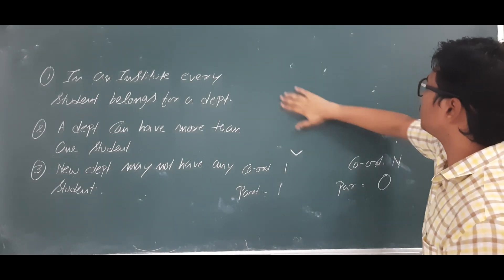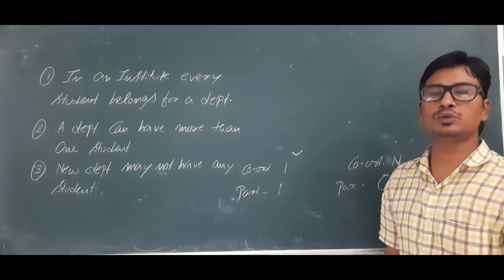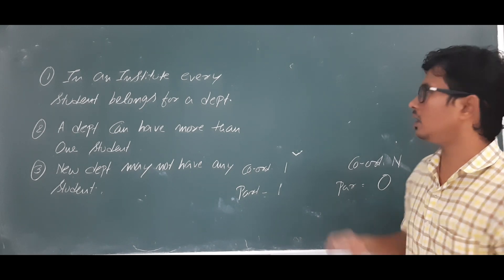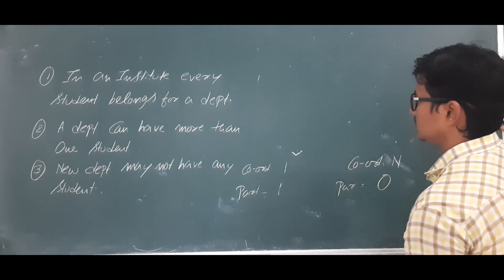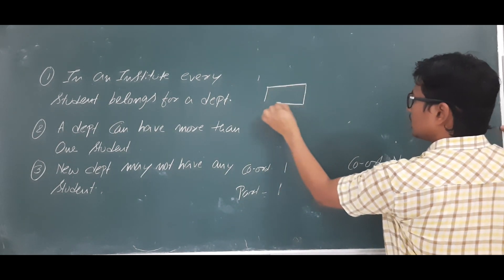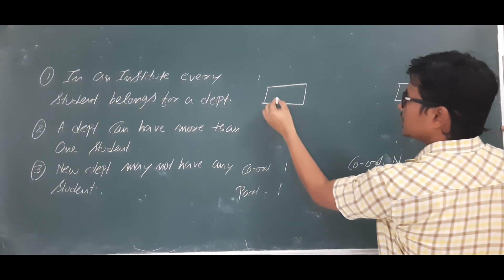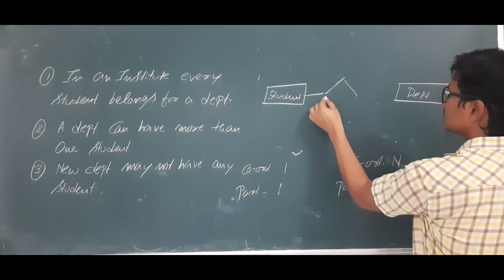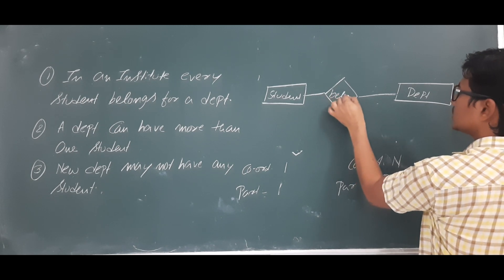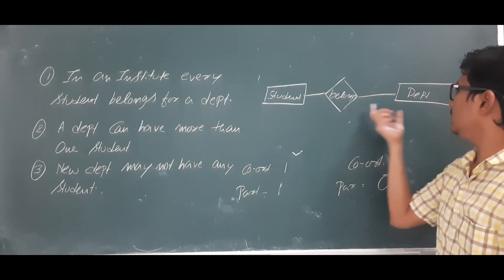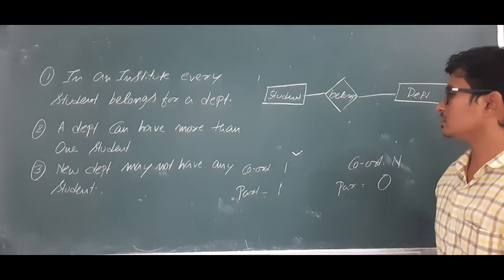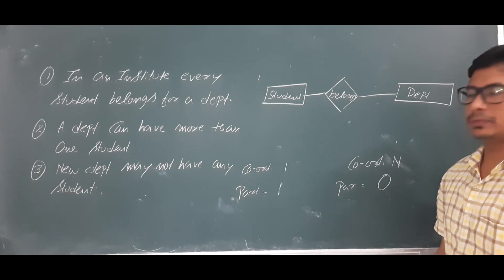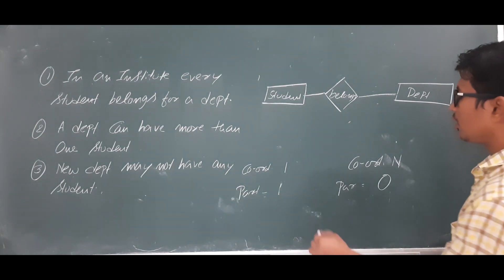Once we have the cardinality and participation for each entity, we can construct the ER diagram. The ER diagram can be represented in two ways: cardinality ratio representation and min-max representation. In cardinality ratio representation, the student entity is drawn as a rectangle, the department entity as a rectangle, and the relationship between them — 'belongs' — is shown in a diamond.